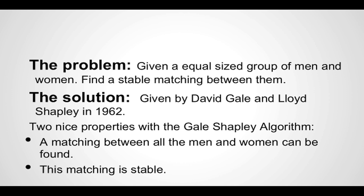The solution was given by David Gale and Lloyd Shapley in 1962 in the form of the Gale-Shapley algorithm. Two nice properties of the algorithm are: first, a matching can always be found — whether we have 10 men and 10 women or 10 million men and 10 million women, the algorithm will terminate. Second, the matching it finds is a stable matching.